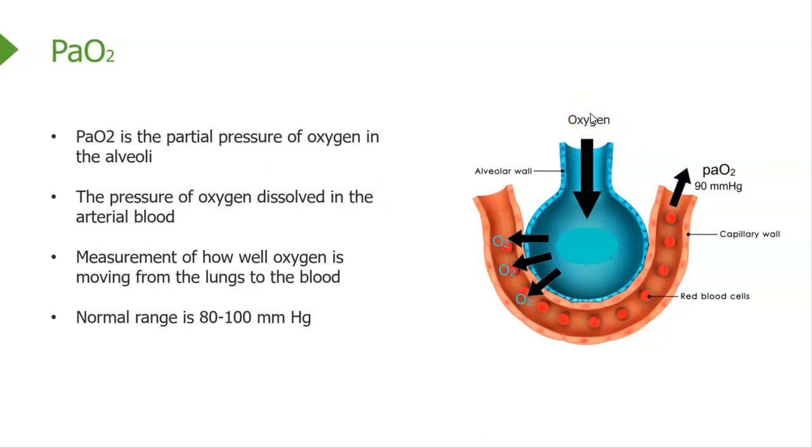I breathe air in, so it comes in down here, and it's exchanged, and it goes out to my body. But look at this number right over here, the PaO2 of 90 millimeters of mercury. PaO2 is the partial pressure of oxygen in the alveoli. This is something that has to be calculated, so we're looking at the pressure of oxygen dissolved in the arterial blood. This is a measurement for us to use to see how well oxygen is moving from the lungs into the blood. That's what a PaO2 will tell us, and we know the normal range is 80 to 100.